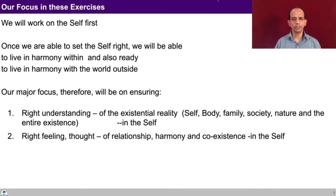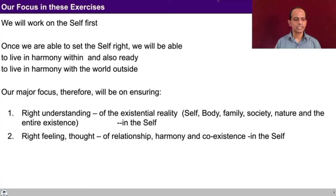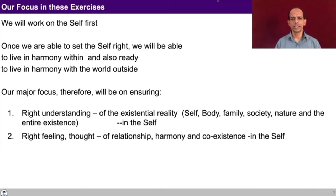Our major focus will be on ensuring: one, right understanding of the existential reality — that includes the self, body, family, society, nature, and the entire existence — in the self; and secondly, to ensure right feeling and right thought on this basis, which means the right feeling and right thought of relationship, harmony and coexistence. That is again going to happen in the self, by the self. This is our major focus in exercises 1 and 2.